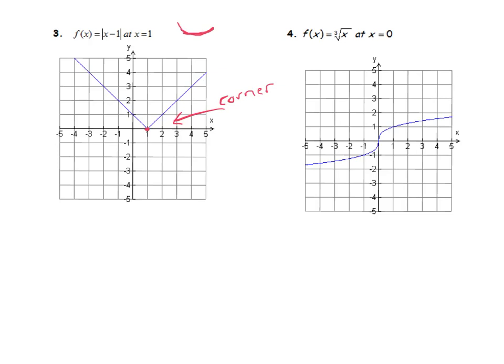And that doesn't happen here, so we cannot draw a tangent line. So we would say that the slope does not exist. Okay, the slope of the tangent line does not exist because you can't draw a tangent line.